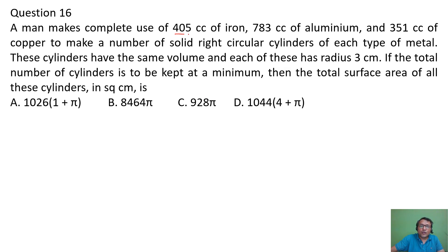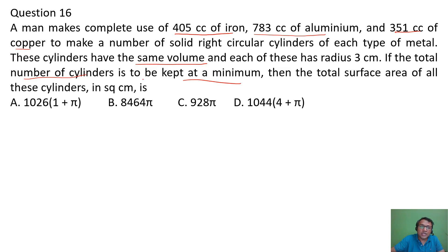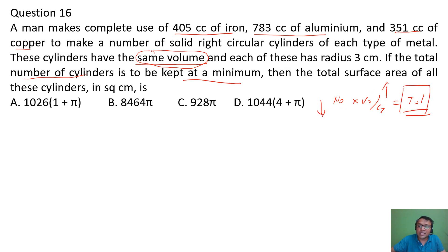We use 405 cc of iron, 780 cc of aluminum, and 351 cc of copper to make solid right circular cylinders. These cylinders have the same volume and we want to keep the number of cylinders minimum. If you want to minimize the number of cylinders, the volume per cylinder has to be maximum, because number of cylinders times volume per cylinder equals total volume. Since total volume is constant, reducing the number means maximizing volume per cylinder.